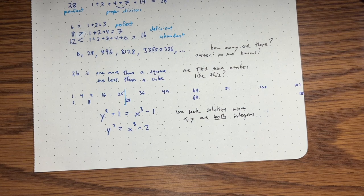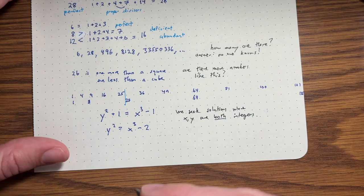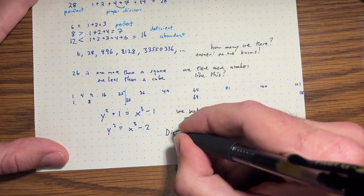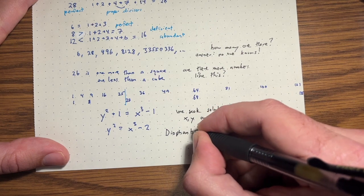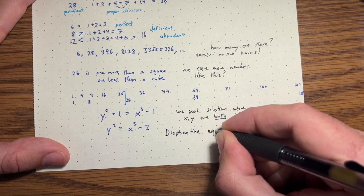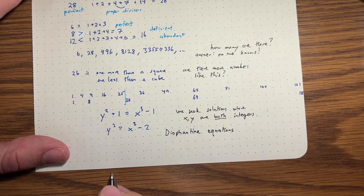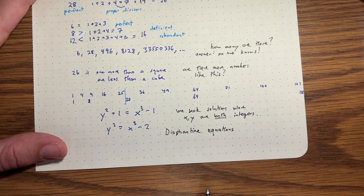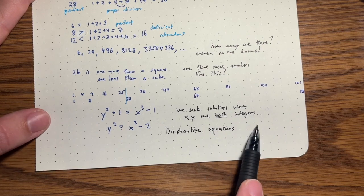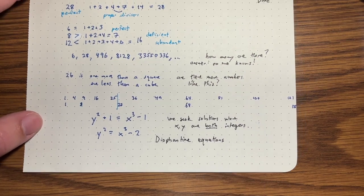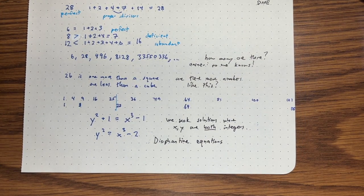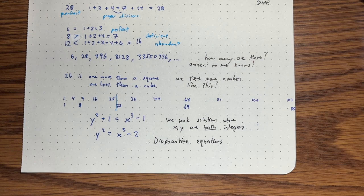You can pick literally any integer and do X cubed minus two, and then take the square root of that, right? And then we'll get some value for Y. The trouble is that square root is not always going to be an integer. So we want X and Y to both be integers. And this is an example of a diophantine equation.